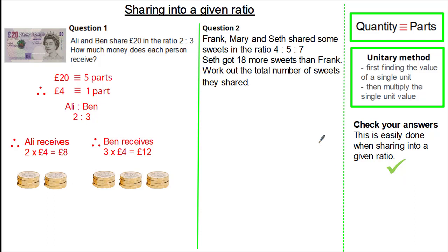Now let's look at a slightly different question, but still requiring us to share given a ratio. Frank, Mary and Seth shared some sweets in the ratio 4 to 5 to 7. Seth got 18 more sweets than Frank. We need to work out the total number of sweets they shared.